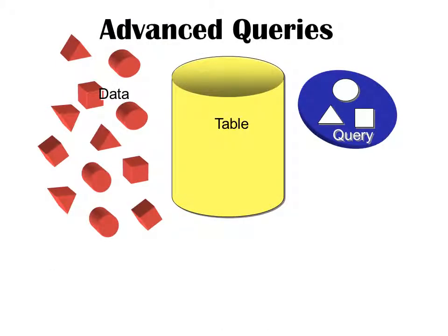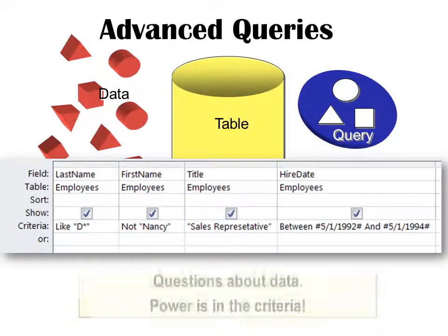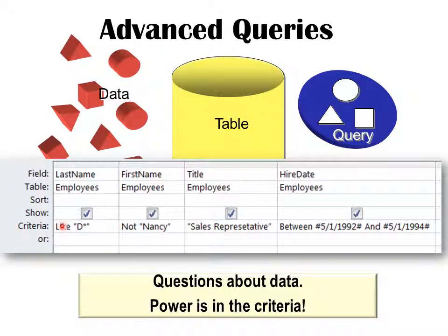If you've heard me talk about queries before, you know I think of tables as buckets and the data as little blocks — children's blocks that go in the bucket. A query is a lid that allows you to look into the bucket. It is not a separate bucket; it is the actual data. So if we don't want to see all the data, we simply tape over those holes by writing criteria, saying what we want to see in that data.